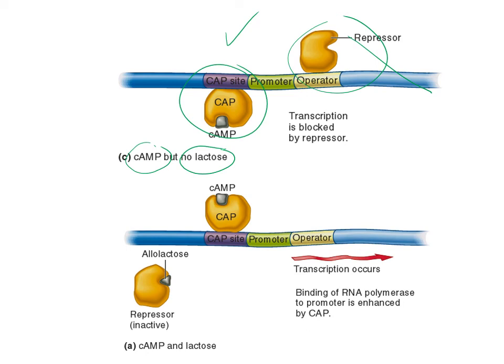The fourth scenario: if we do have lactose, it removes the repressor, and we also get the activator bound at the promoter. So we get super-high amounts of transcription and lots of lac operon products being produced. Therefore, lactose will be able to be broken down very easily.